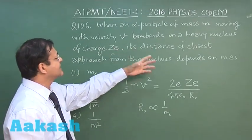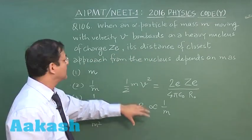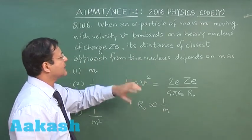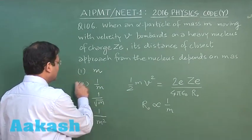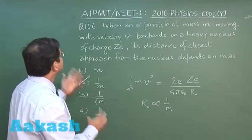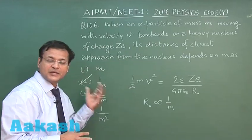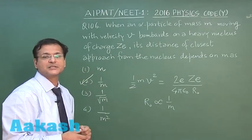So this is what is demanded. Its distance of closest approach, that is r naught, from the nucleus depends on m as mass as, so this will be 1 by m. I will be marking answer 2 for this question 106. Now let us look at next question, that is 107.